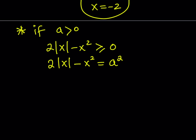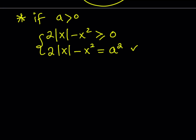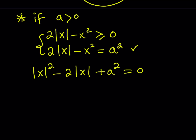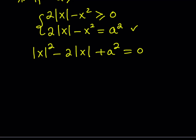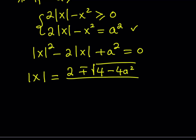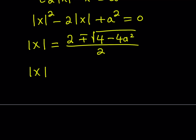We can rearrange this as a quadratic: |x|² - 2|x| + a² = 0. Setting u = |x| and applying the quadratic formula, we get |x| = (2 ± √(4 - 4a²)) / 2, which simplifies after dividing through by 2.